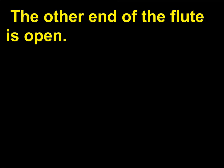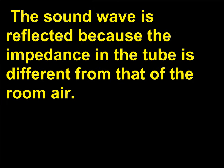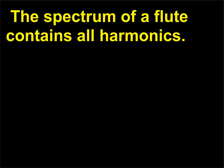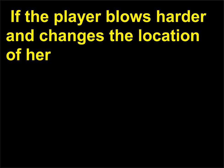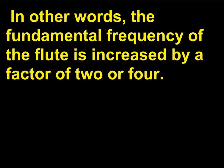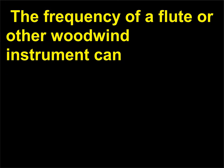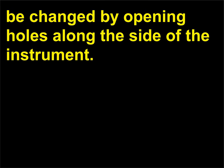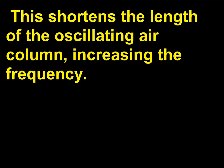The other end of the flute is open. The sound wave is reflected because the impedance in the tube is different from that of the room air. The spectrum of a flute contains all harmonics. If the player blows harder and changes the location of her top lip she can make the flute play one or two octaves higher. In other words, the fundamental frequency of the flute is increased by a factor of two or four. The frequency of a flute or other woodwind instrument can be changed by opening holes along the side of the instrument. This shortens the length of the oscillating air column, increasing the frequency.